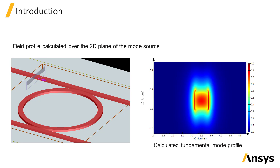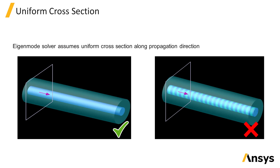The mode source can be used to inject the mode of a waveguide or fiber. The mode source includes an integrated mode solver which uses the finite difference eigenmode solving algorithm to calculate the field profile of the supported modes of a given structure cross-section. The mode solver assumes that the cross-section of the structure is constant along the propagation direction, so it cannot be used to solve for Bloch modes, which are 3D modes of a waveguide that has periodicity along the propagation direction, such as the photonic crystal waveguide like the one shown here.